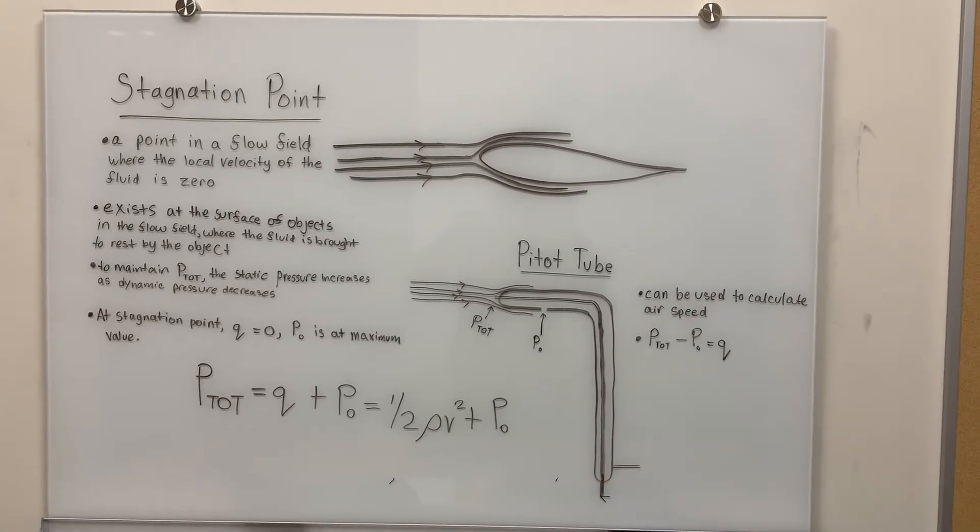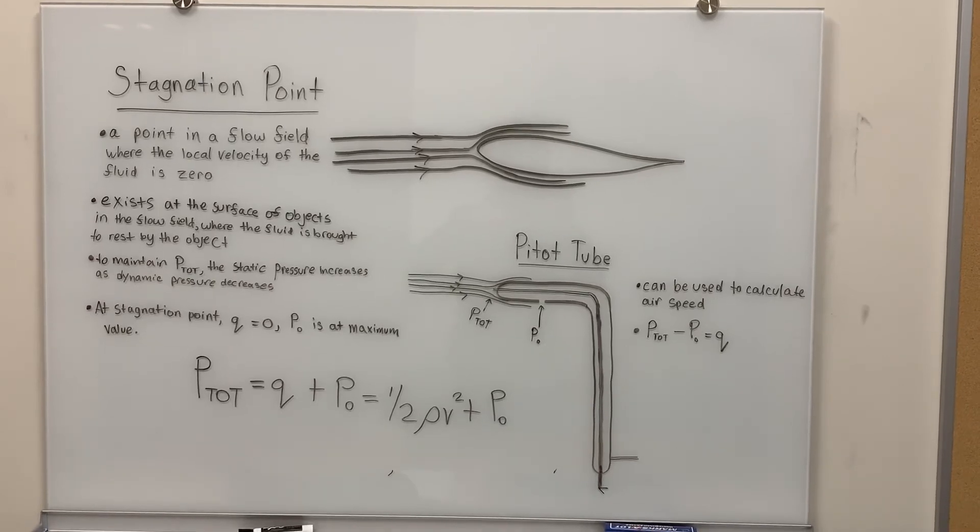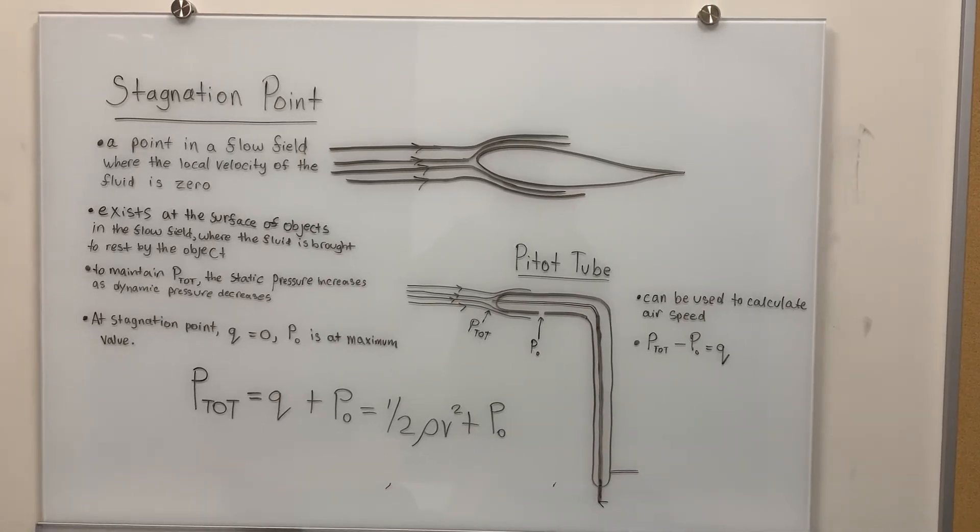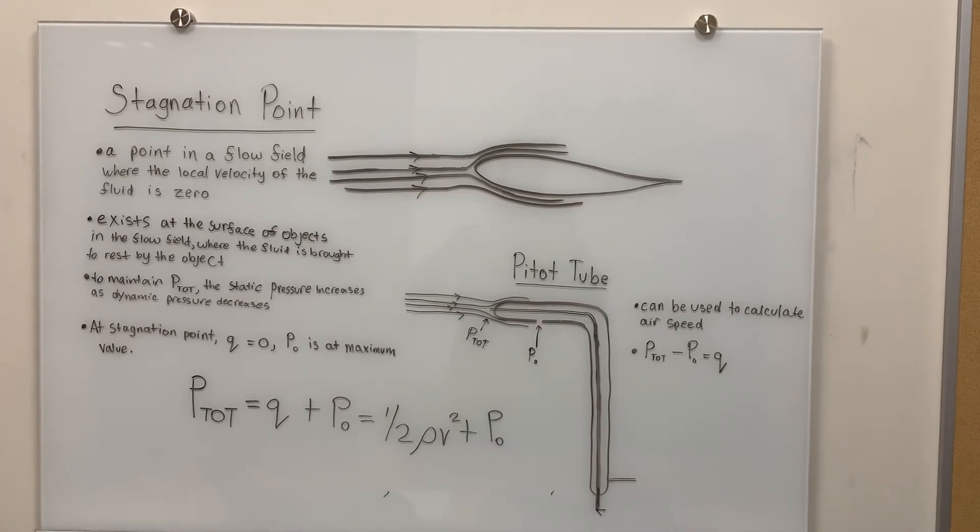At the tip of the pitot tube, where the hole that calculates total pressure is placed, a stagnation point is created.